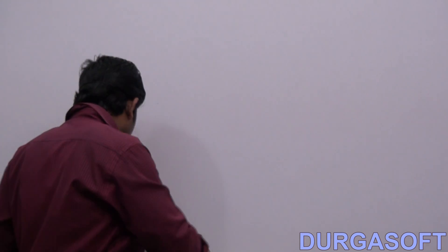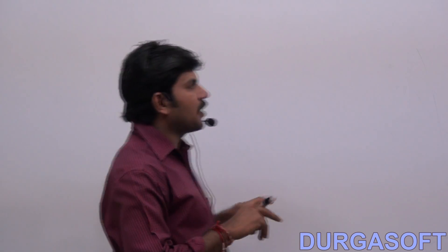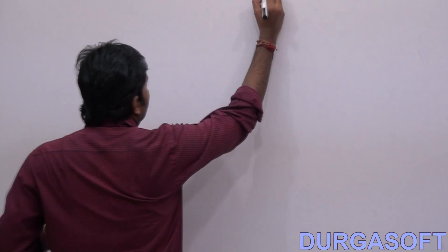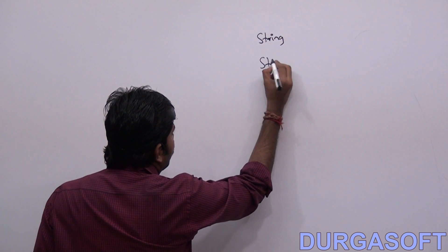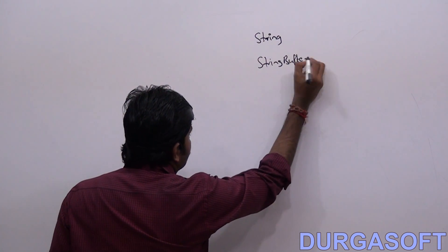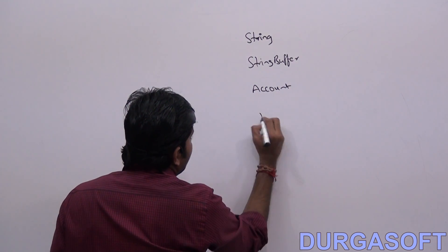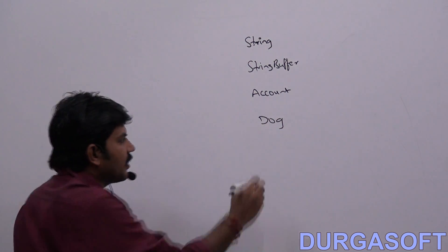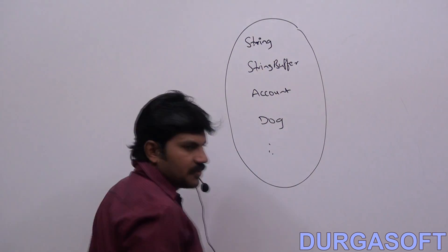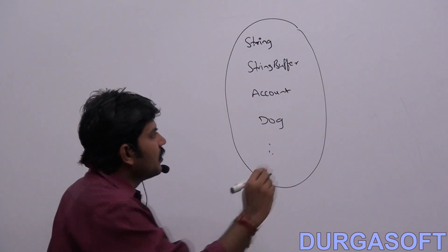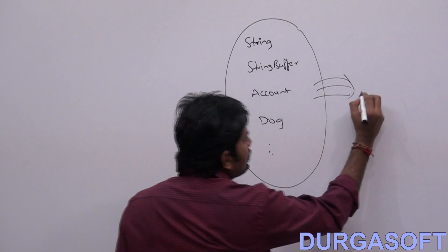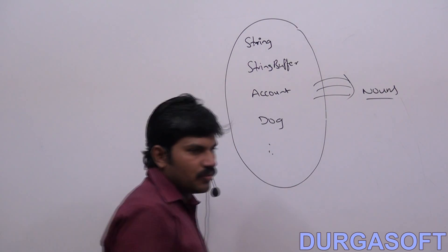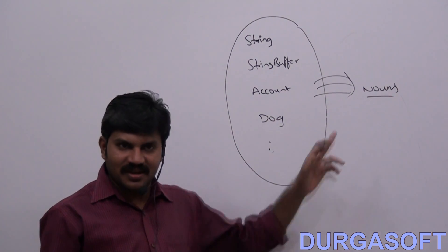Coding standards for classes. Can you spell out any class name? It may be a predefined class or our own class. We have String, StringBuffer, Account, Dog — do you know all these are various class names? In English, if you observe, these are nouns. He, she — these kinds of things are nouns, right?